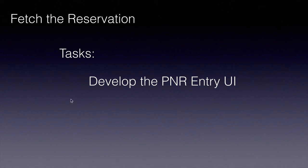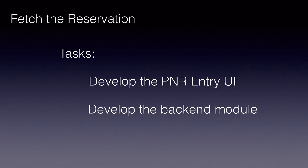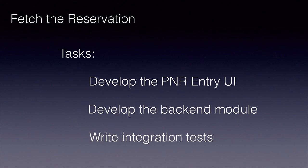This task breakdown can be done during the sprint planning or during the sprint itself. 'Develop the PNR entry UI' could be one task under the fetch the reservation story. 'Develop the backend module' is the second task, and finally 'write integration tests' could be another task.